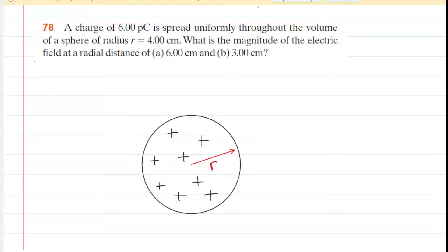As always, if you haven't done so yet, please pause the video and re-read the problem before listening on. We have a charge of 6 picocoulombs that is spread uniformly throughout the volume of a sphere whose radius is lowercase r. In Part A, we are asked to determine the magnitude of the electric field at a radial distance of 6 centimeters.